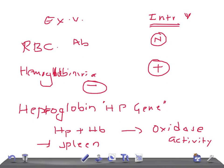Because free hemoglobin binds to haptoglobin in intravascular hemolysis, the level of haptoglobin in the blood becomes low. So you see low haptoglobin levels in intravascular hemolysis. In extravascular hemolysis, the reticuloendothelial system — especially splenic monocytes and phagocytes — phagocytose the erythrocytes and hemoglobin is not released into the circulation, so haptoglobin levels remain normal.